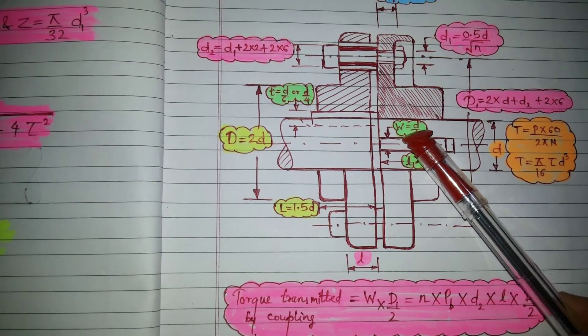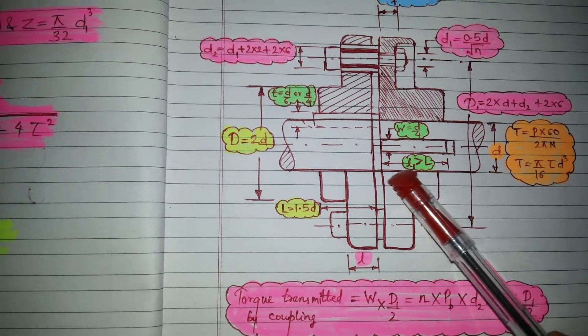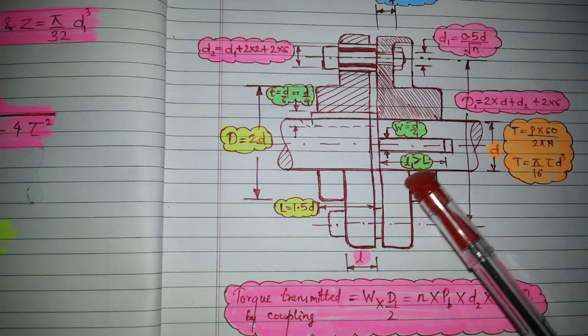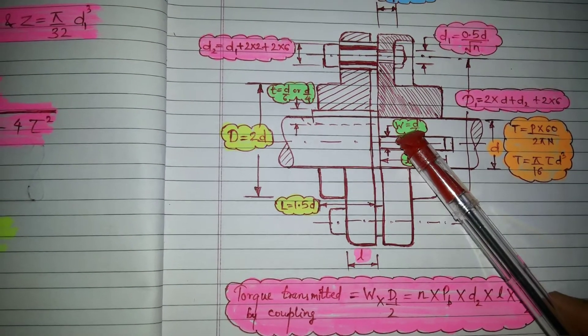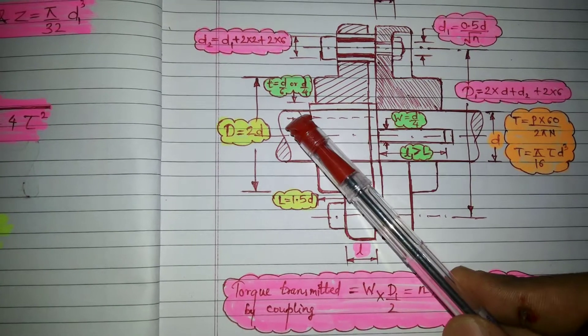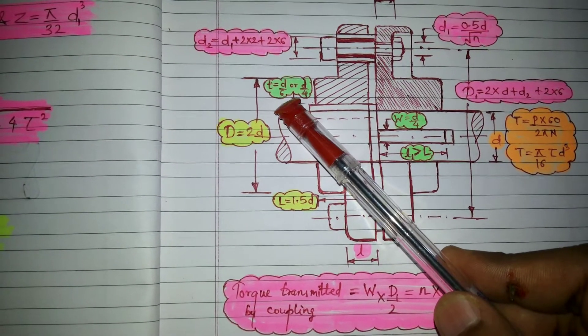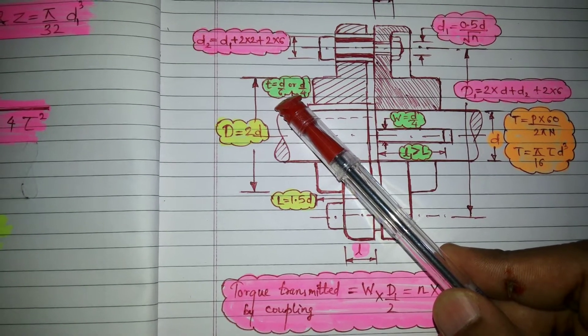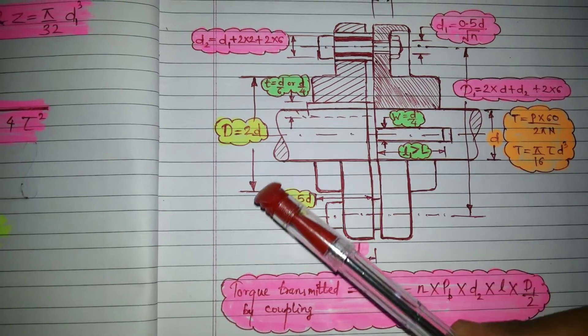And now, step number four which is related to key. So we can have a length of the key which is greater than this L. And the width is D by 4 and the thickness of the key can be D by 6 if it is a rectangular key and will be equal to D by 4 if it is a square key.